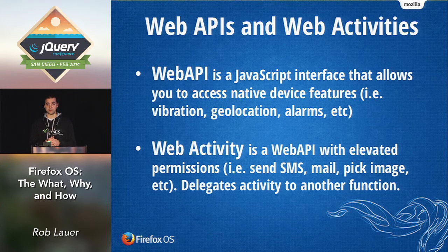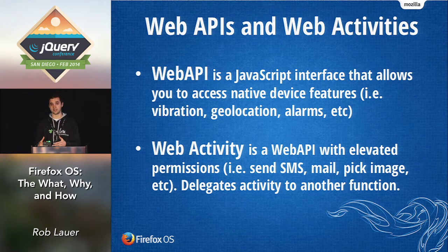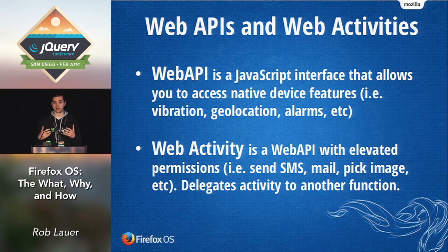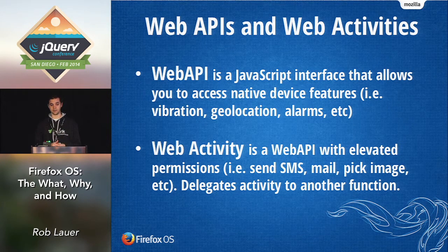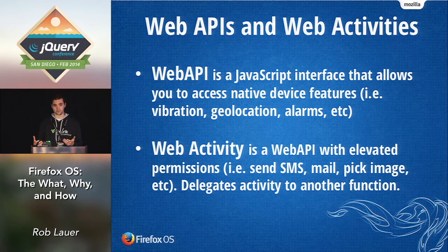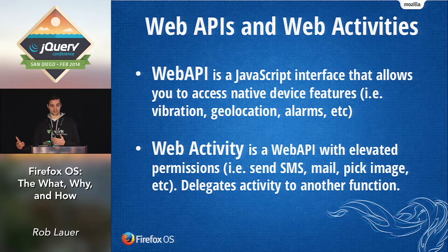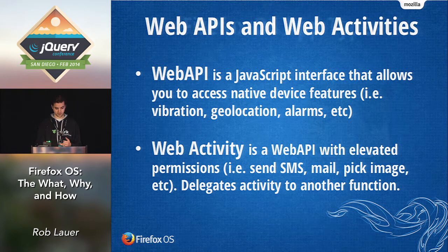A web activity is a web API that allows you to delegate an activity to another feature on the device. For example, if I'm developing an app that needs to pick an image from the image library, that's considered a web activity, because I'm delegating that image-picking activity to another function on the device.